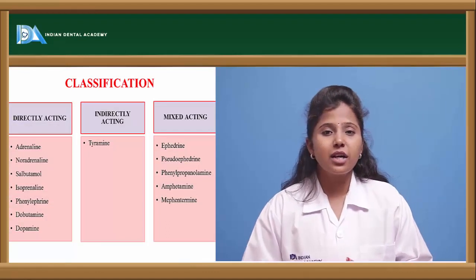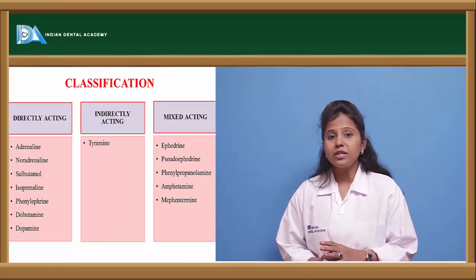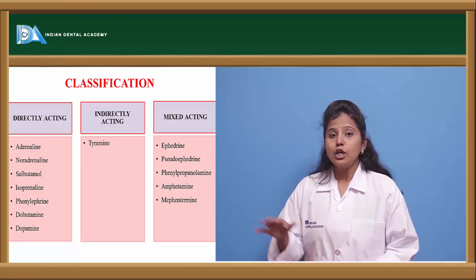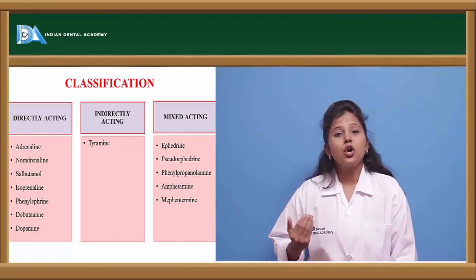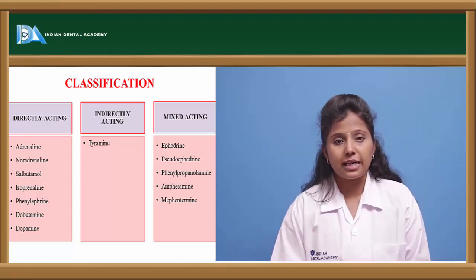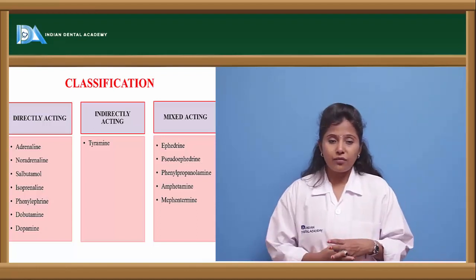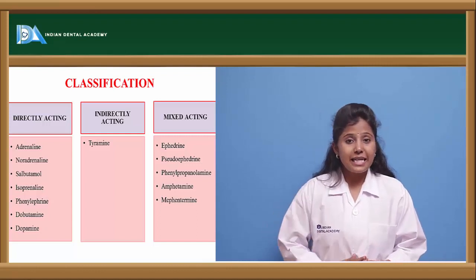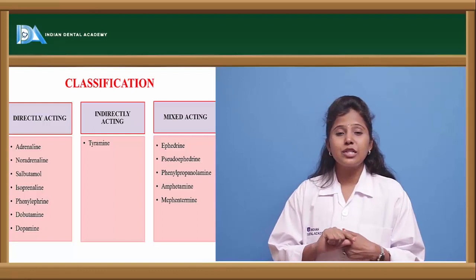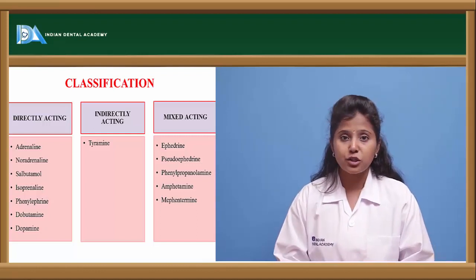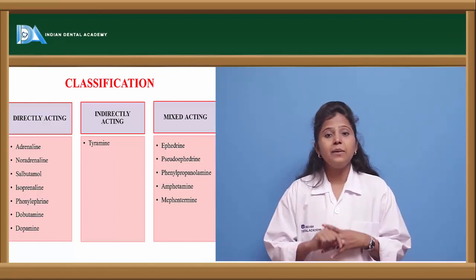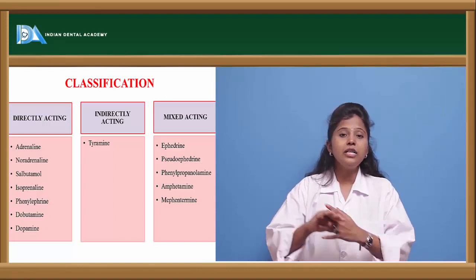Let us see the classification of adrenergic agonists. Sympathomimetics are the drugs that mimic the action of the sympathetic nervous system. There are three categories: directly acting, indirectly acting, and mixed acting. Directly acting drugs bind directly to the receptors and exert their action. Indirectly acting drugs do not bind to the receptor directly but inhibit the binding of adrenaline or noradrenaline to those receptors.